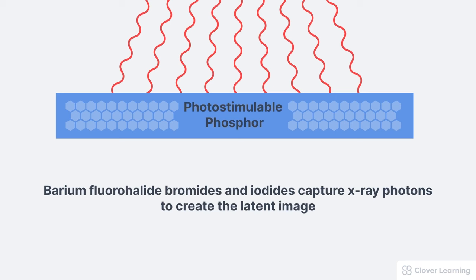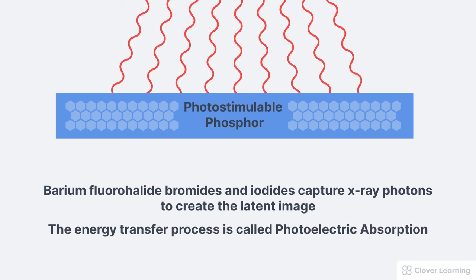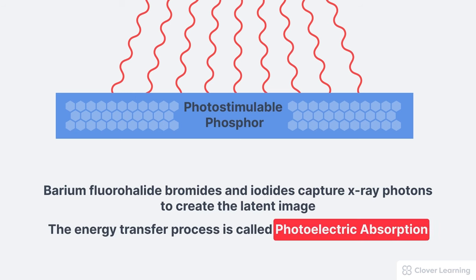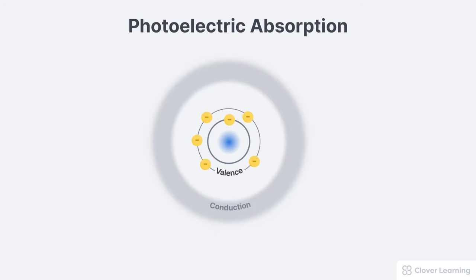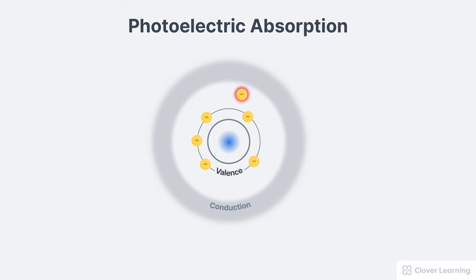X-ray photon energy is captured in the phosphor layer by energy transfer through a process called photoelectric absorption. This is a key interaction between X-ray photons and matter. When the X-ray photon strikes one of the atoms in the phosphor layer, it ejects an inner shell electron and is absorbed. This energy from the absorbed X-ray photon excites the ejected electron, making it a photoelectron.